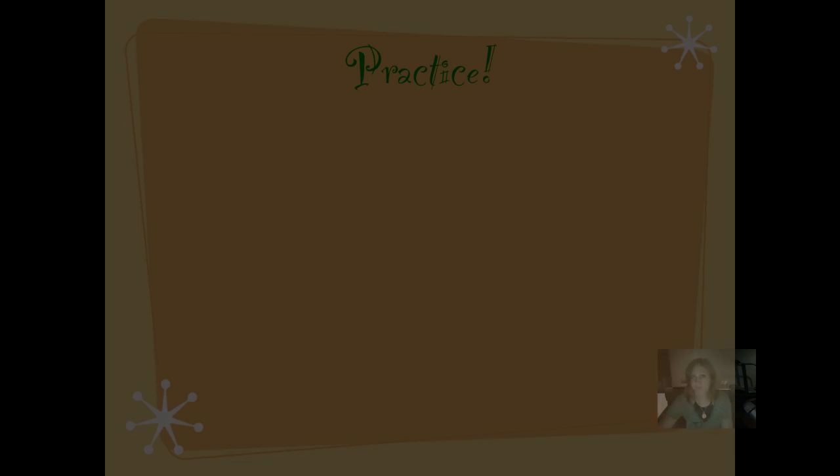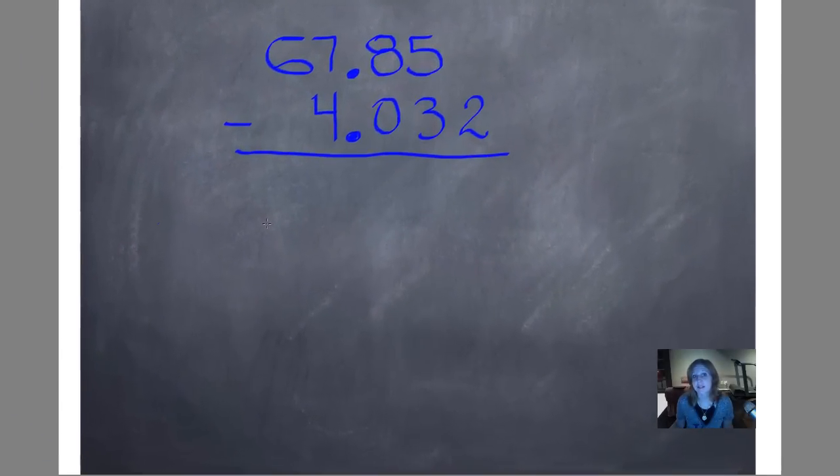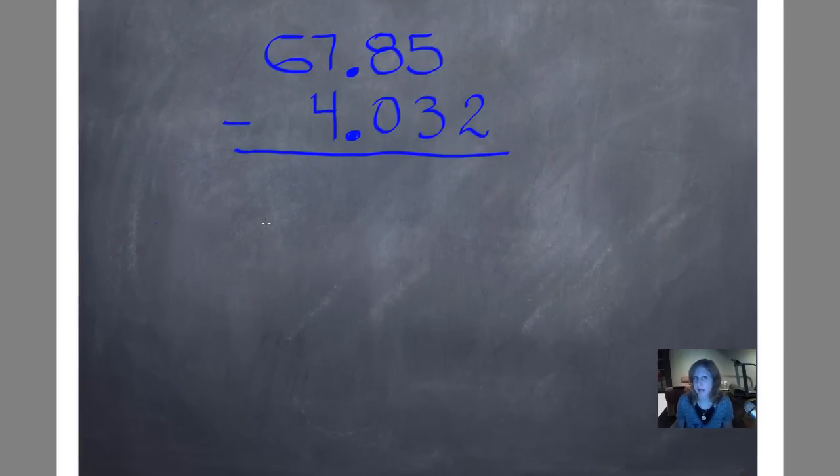Now we're going to do an example. We're subtracting 67 and 85 hundredths minus 4 and 32 thousandths. So these numbers have different numbers of digits in them. And because we have this empty place value position, it makes us more likely to make a mistake. We don't want to do the same thing that we might do if we were adding, which is to just take that 2 and write it down below. That would not be correct. So I really want to make sure you add a zero in there to fill that place value position. You know that zero minus 2 isn't 2. Zero minus 2 we can't do.